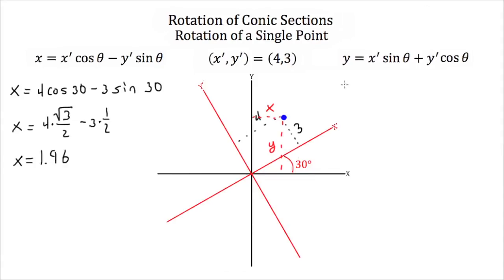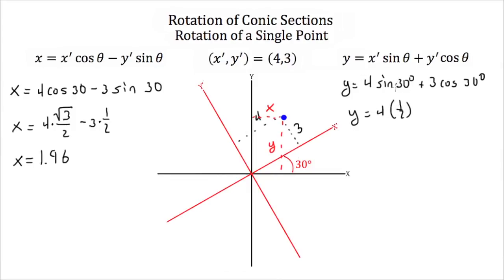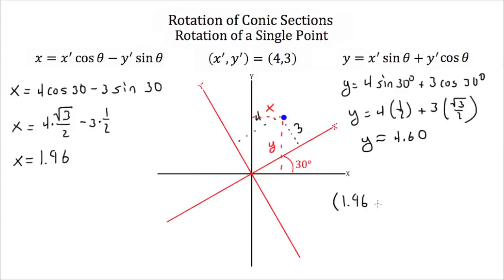We do the same thing for y. Y is equal to x prime, which is 4, times the sine of our angle of rotation, which is 30 degrees, plus y prime, which is 3, times the cosine of our angle of rotation, which is 30 degrees. So y is equal to 4 times 1 half, because that's what the sine of 30 is equal to, plus 3 times the cosine of 30, which is the square root of 3 over 2. Plug all this into your calculator and you'll find that y is approximately 4.60. So our coordinates are 1.96 and 4.60, and that looks about right — this is about 2, and this is about 4.5.